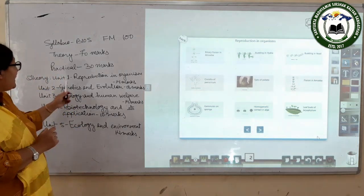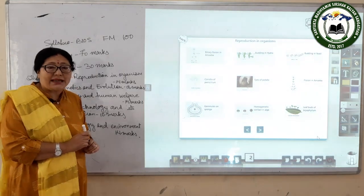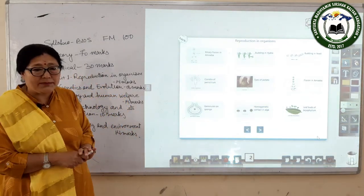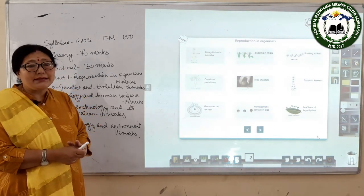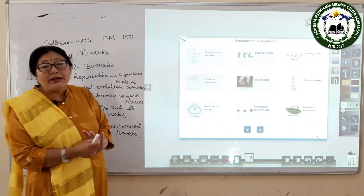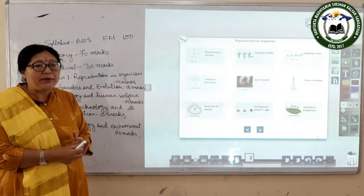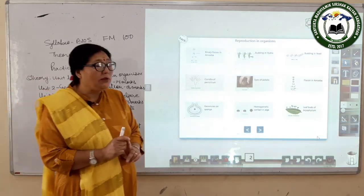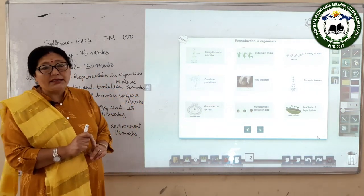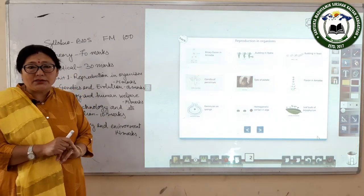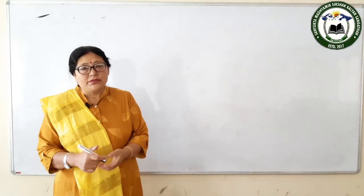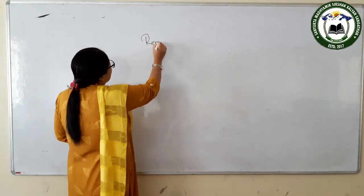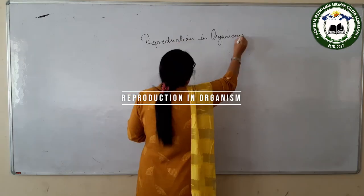Today I will start with Unit 1 — Reproduction in Organisms. This unit has 4 chapters: Reproduction in Organisms, Sexual Reproduction in Flowering Plants, Human Reproduction, and Reproductive Health. So first chapter is Reproduction in Organisms.